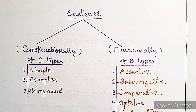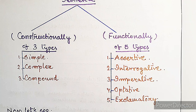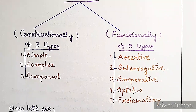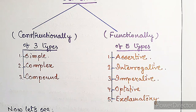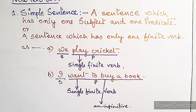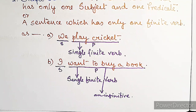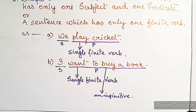Now the types of sentences. Constructionally, a sentence is of three types; functionally, a sentence is of five types. Constructionally: simple, complex, and compound. Functionally: assertive, interrogative, imperative, optative, and exclamatory. A simple sentence has only one subject and one predicate, or only one finite verb. For example, 'We play cricket' has one subject 'we' and one finite verb 'play'. 'I want to buy a book' has one finite verb 'want'; 'to buy' is an infinitive.